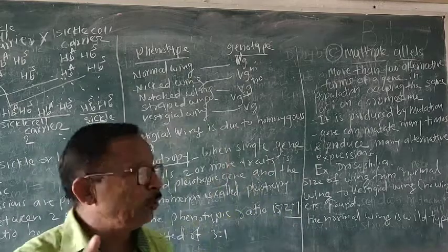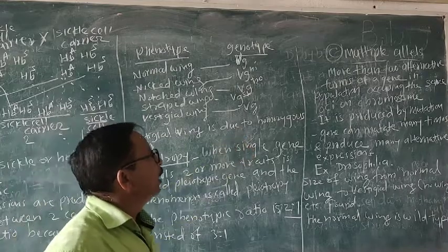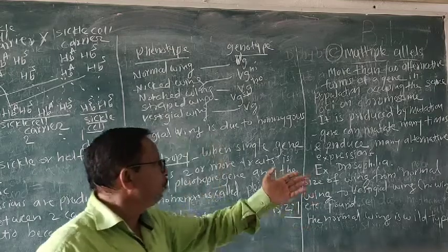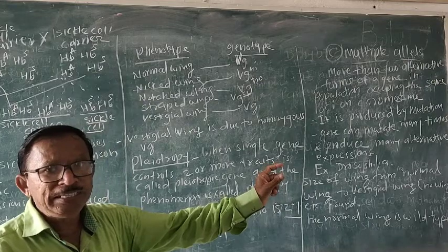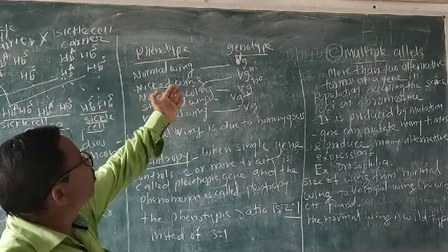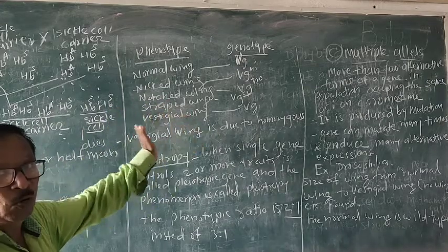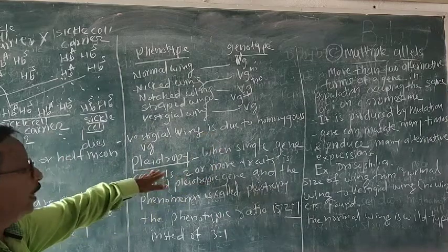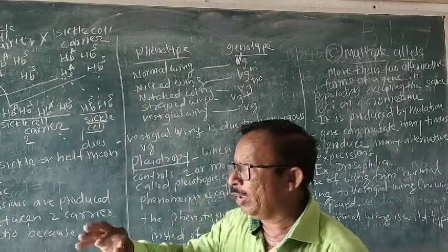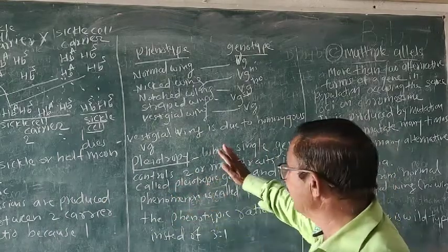So now we have completed two things today. Multiple alleles: more than two alternative forms of a gene in the population, present on the same locus. Example is Drosophila — normal wing Vg+, nicked wing Vg-N, notched wing Vg-O, strapped wing Vg-ST, no wing small v small g. And pleiotropy — when a single gene controls more than two traits, the gene is called the pleiotropic gene and the phenomenon is called pleiotropy.